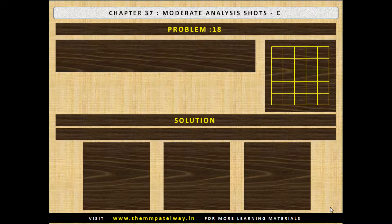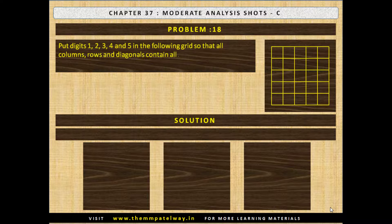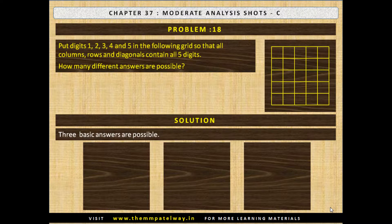Problem No. 18. Put digits 1, 2, 3, 4 and 5 in the following grid so that all columns, rows and diagonals contain all 5 digits. How many different answers are possible? The solution is three basic answers are possible.